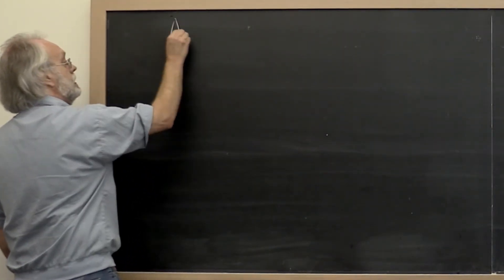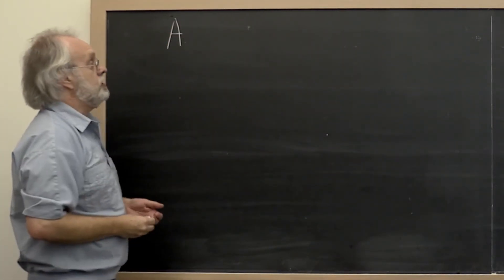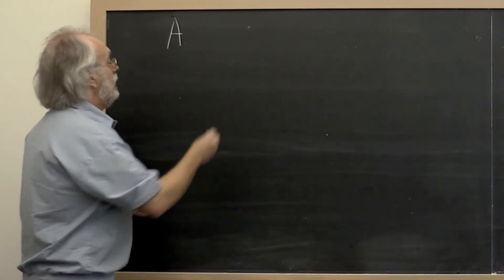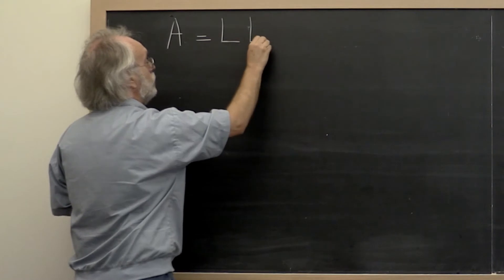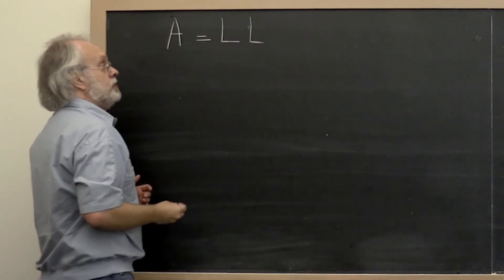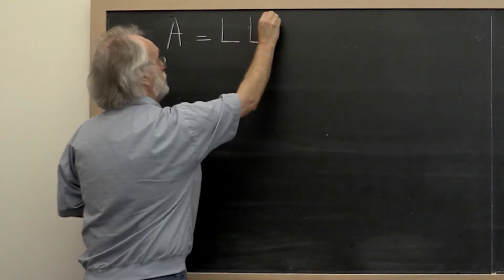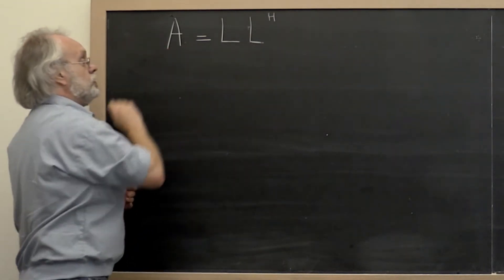Let's say A is Hermitian positive definite. And the claim is that we can then find its Cholesky factor L, which is a lower triangular matrix such that L times L Hermitian transpose is equal to A.